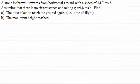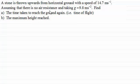Hi there. Welcome to this video on vertical motion under gravity. What I want to do is address a common misconception about using positive and negative values of g, the acceleration due to gravity. We have a stone thrown upwards from horizontal ground with a speed of 14.7 metres per second. Assuming no air resistance and taking g to be 9.8 metres per second squared, find in Part A the time taken to reach the ground again — the time of flight — and in Part B the maximum height reached.